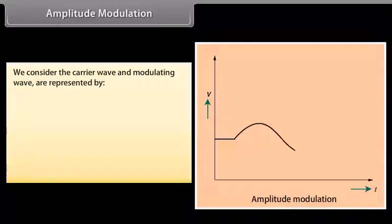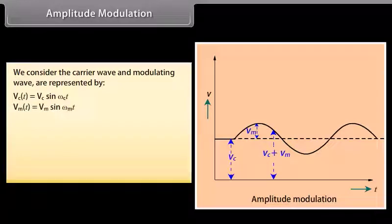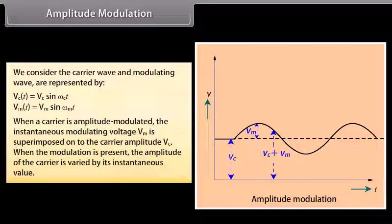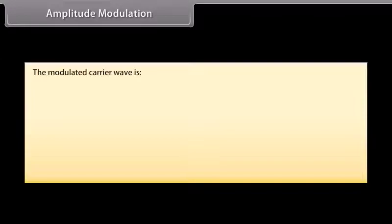Amplitude modulation. The carrier wave and modulating wave are represented as: V_C(t) = V_C sin(ω_C t) and V_M(t) = V_M sin(ω_M t). When a carrier is amplitude modulated, the instantaneous modulating voltage V_M is superimposed onto the carrier amplitude V_C. When the modulation is present, the amplitude of the carrier is varied by its instantaneous value.